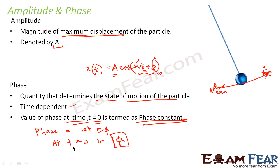That is, phase constant always denotes the initial state of the particle. That means the state of the particle at that point from where you are considering the motion.